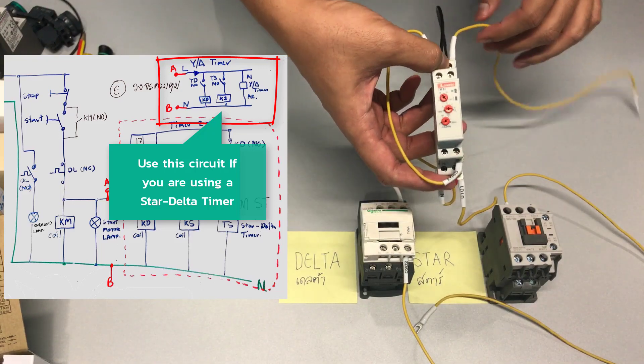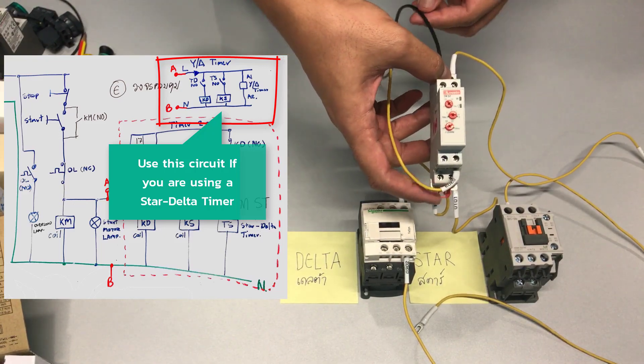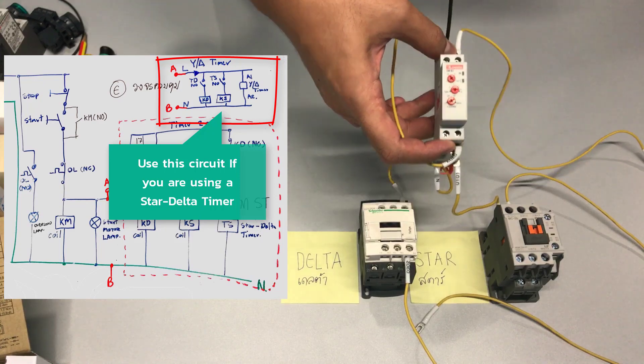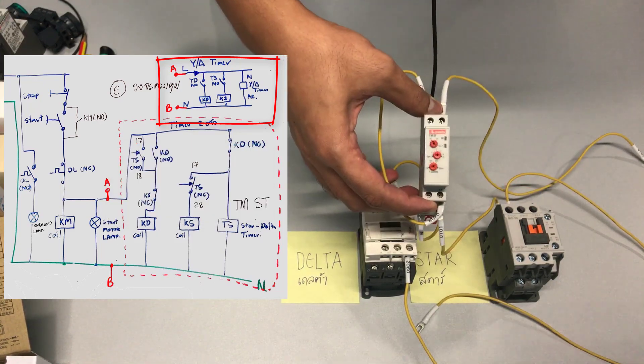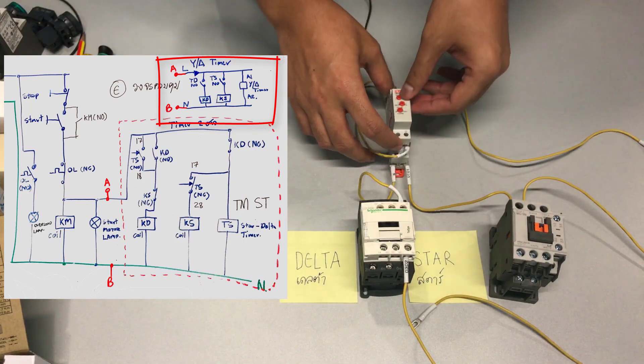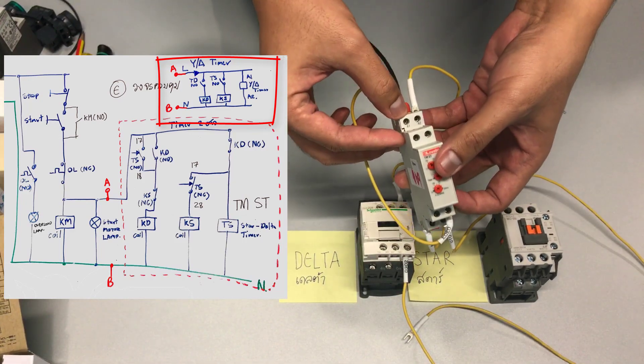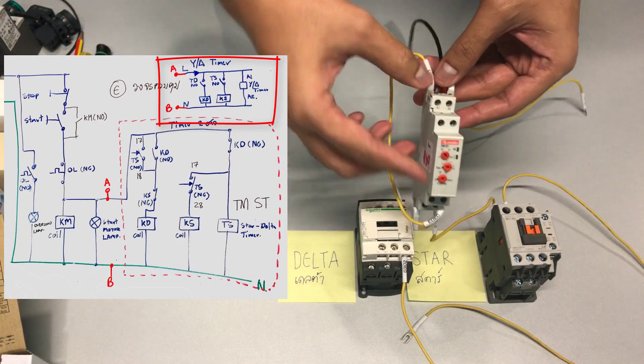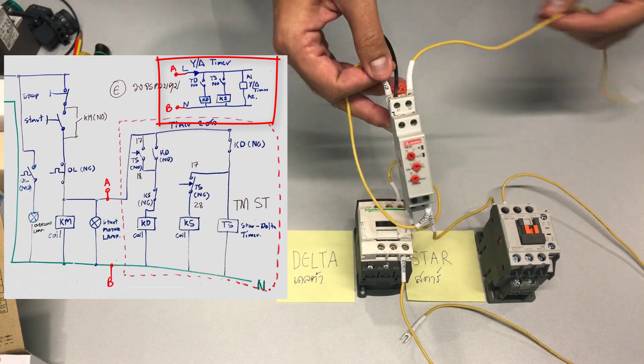The easiest way to show you is from line to neutral. 220 volt AC supply in here. It connects to A1 and the A2 here then connects to the neutral.